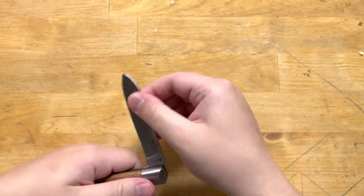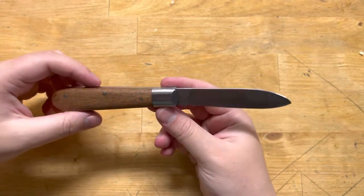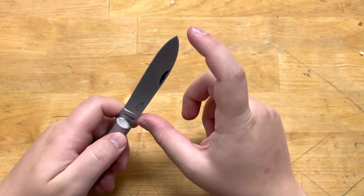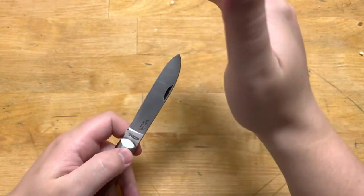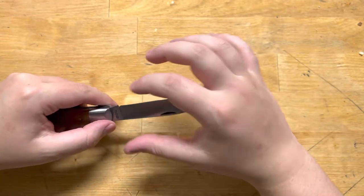So they have one called the Harbormaster, which I'll probably get one of those, but it's a giant sheepsfoot blade with a quite tall grind on it.